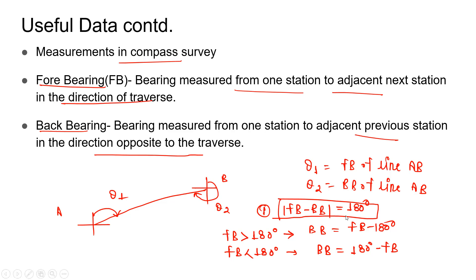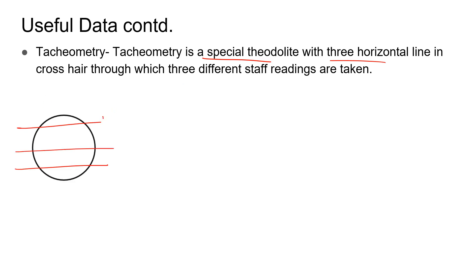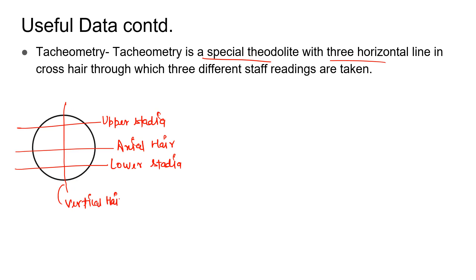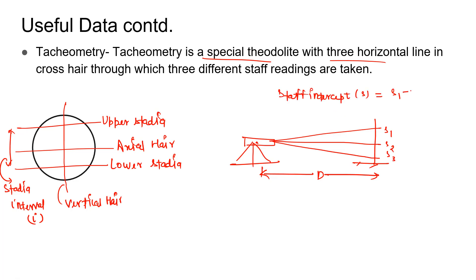Tacheometry is a special theodolite with three horizontal lines in the crosshair, through which three different staff readings are taken. The upper line is the upper stadia, the bottom line is the lower stadia, and the middle is the axial line. The vertical line passes through all three. The difference between upper and lower stadia readings is termed the stadia interval, denoted by i. The three readings obtained are S1, S2, and S3, and the staff intercept S = S1 − S3.